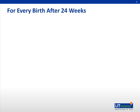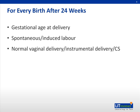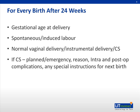For every birth after 24 weeks, we need to know the gestational age at delivery, whether the person labored — and if so, whether it was spontaneous or induced labor — and the mode of delivery, whether it was a normal vaginal delivery, instrumental delivery, or cesarean section. If it was a cesarean section, we need to know whether it was planned or emergency, the reason for it, and whether there were any intraoperative or postoperative complications. Specifically, we need to ask if there are any special instructions for the next birth.